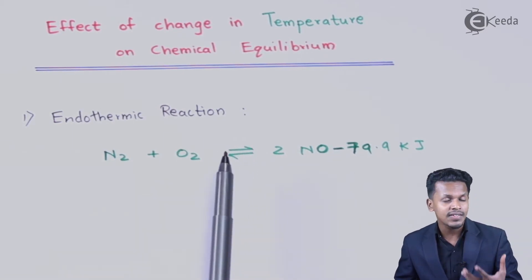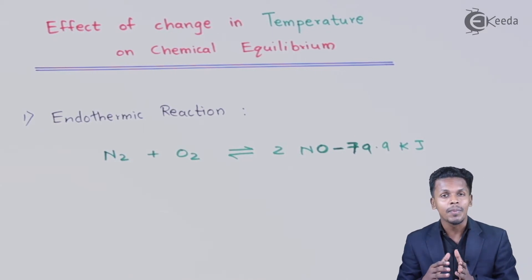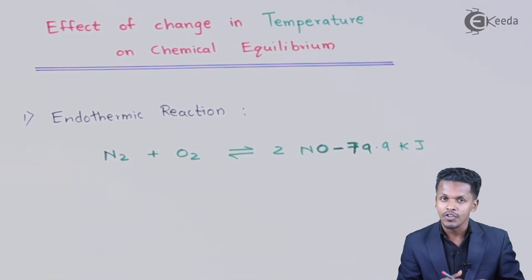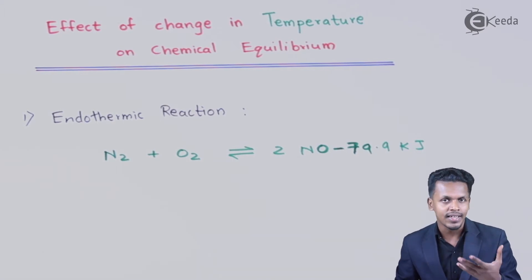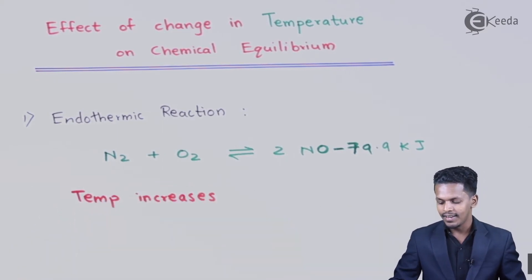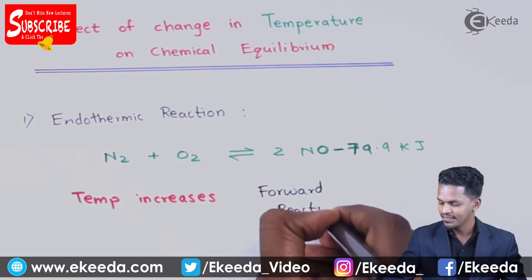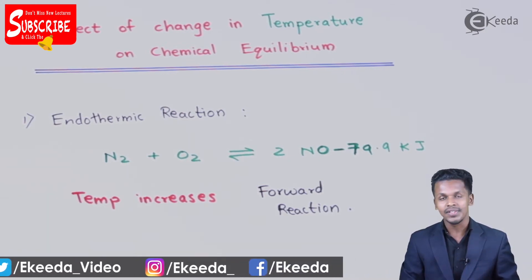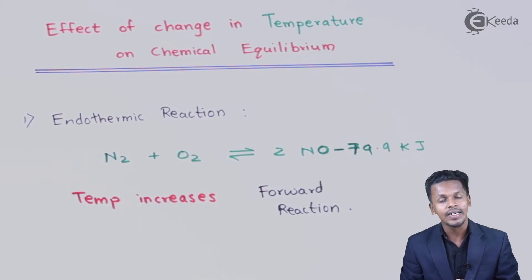If we decrease the temperature, since this reaction is one that absorbs heat, according to Le Chatelier's principle the equilibrium will shift from right to left — from products back to reactants — giving us a backward reaction. So for endothermic reactions, to obtain a forward reaction and maximum product, we must increase the temperature.